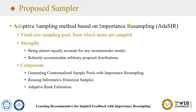In this paper, we propose an adaptive sampling method based on importance resampling, namely ADSIR, to answer the previous questions. ADSIR can be proved to provide approximately accurate adaptive sampling under some conditions, and can robustly accommodate arbitrary proposal distributions. It has three important components: first, generating contextualized sample pools with importance resampling; second, using informative historical samples; and third, adaptive rank estimation. I will introduce them in the following slides.